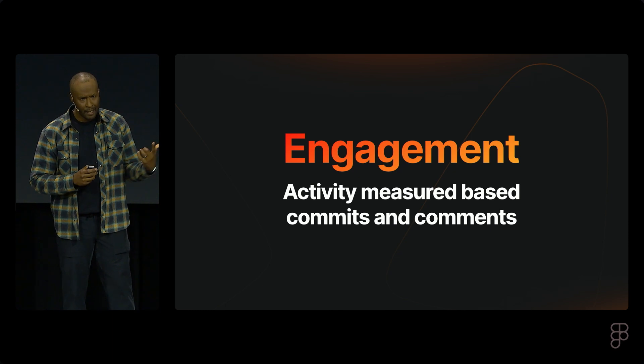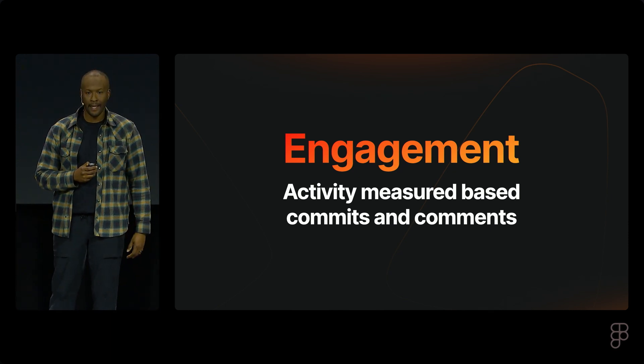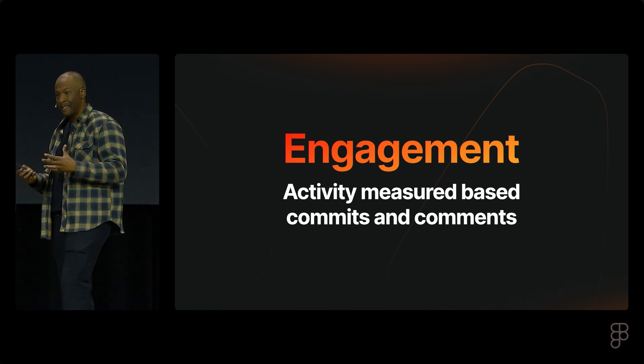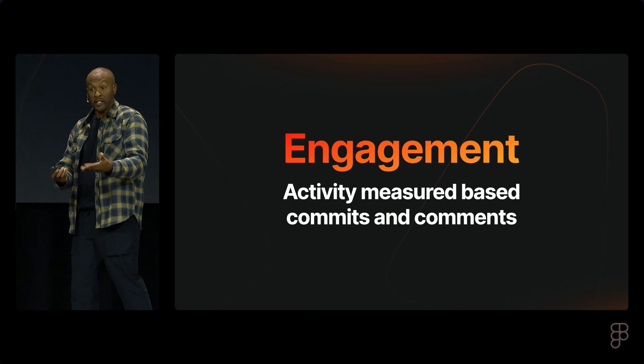At GitHub we identified the top 100 projects not based on stars — the first thing we looked at was unique issue authors. When you see how often people are engaging in the project, it's a really good place to start. That's what we have with this engagement ratio as well — measuring comments and commits to understand: is there traction? Should I use this library?